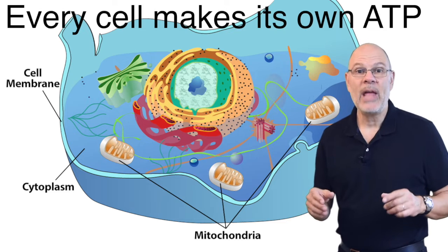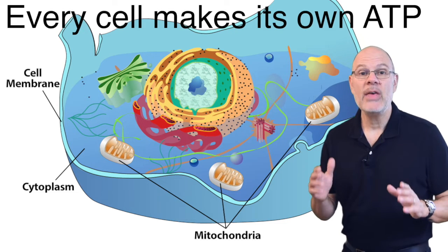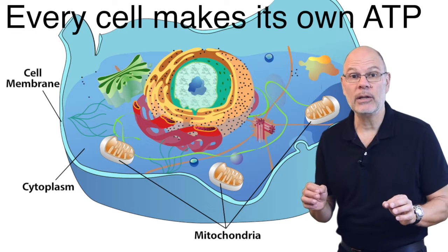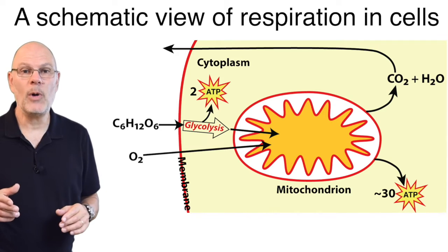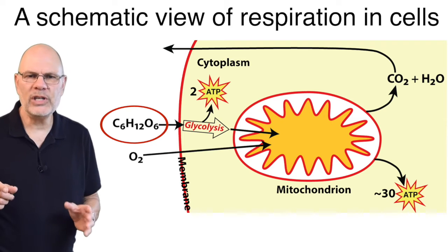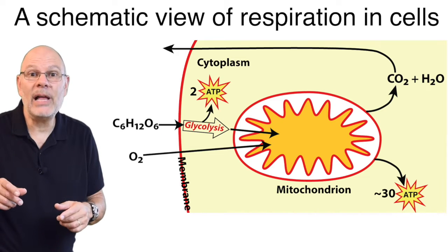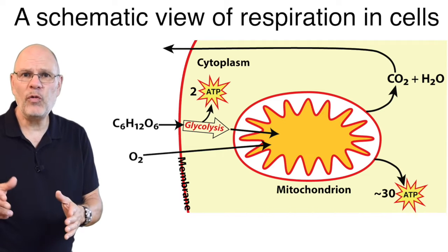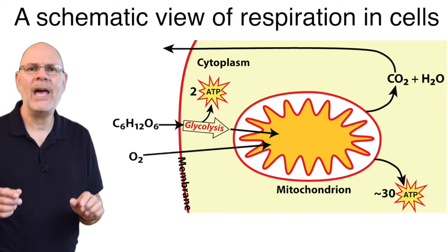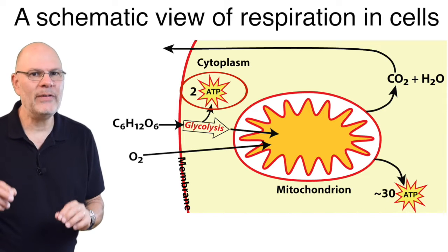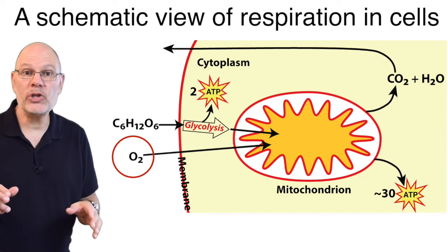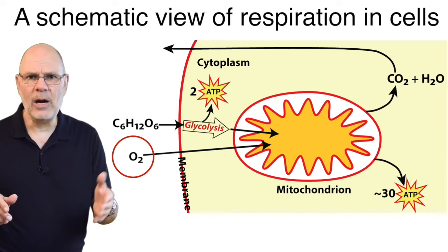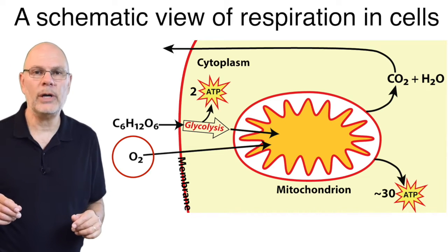Every cell makes its own ATP, and within eukaryotic cells, that process occurs in the cytoplasm and in the mitochondria. Here's a schematic view of these parts. Here's glucose diffusing into the cytoplasm. In the cytoplasm, the enzymes of glycolysis will render the glucose into a form that can enter the mitochondria, and a little bit of ATP is made. Oxygen is also diffusing into the cytoplasm from outside the cell, and from there, it continues into the mitochondria.